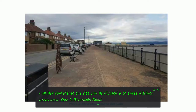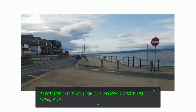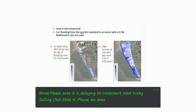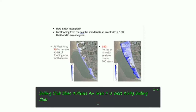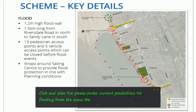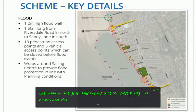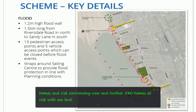Area one is Riversdale Road to D-Lane. Area two is D-Lane to West Kirby Sailing Club. Area three is West Kirby Sailing Club. Under current predictions for flooding from the sea, the standard is a 0.5% likelihood in one year. This means that for West Kirby, 70 homes are at risk from flooding now, and a further 540 homes are at risk with sea level rises in the next hundred years. This information is based on DEFRA's guidance.